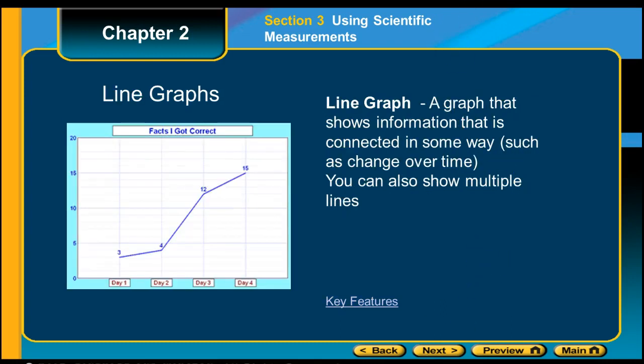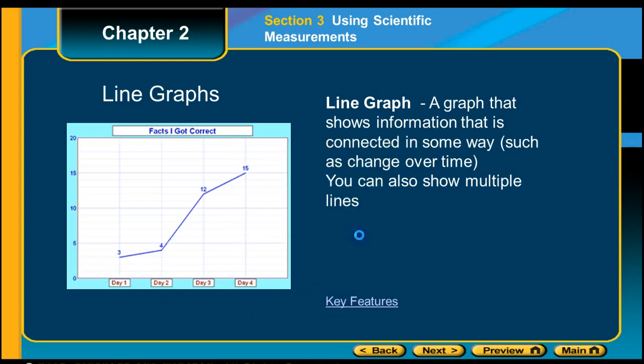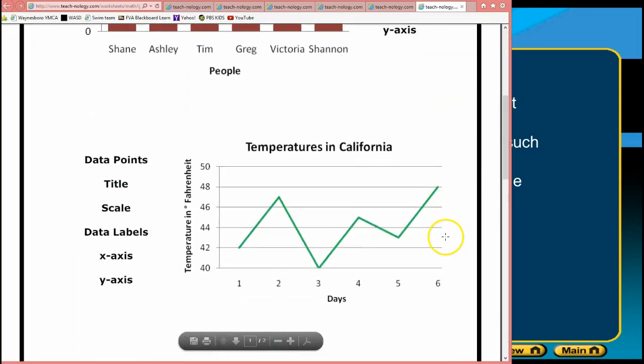A line graph is a graph that shows information that is connected in some way, such as change over time. You can show multiple lines on the line graph. In this example, we have a title. We have a left and a right axis. We have labels on both of those. You want to have a scale if you're dealing with numbers. You need to have your data points. You need to have, usually you have a line. Sometimes it is segmented like this one is. Sometimes it's a straight line. It depends on what you're looking for.